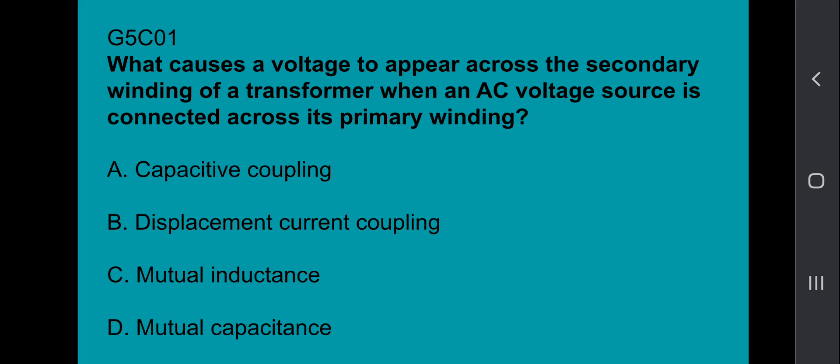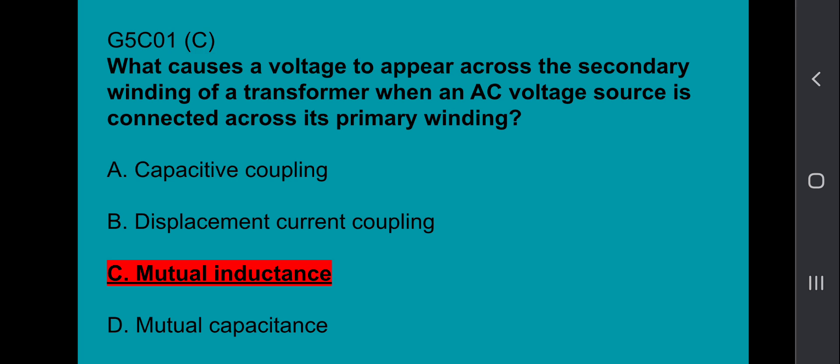G5C01: What causes a voltage to appear across a secondary winding of a transformer when an AC voltage source is connected across its primary winding? That's mutual inductance.